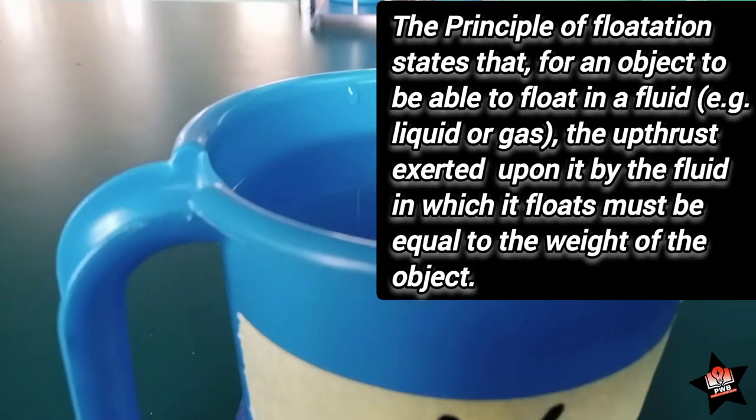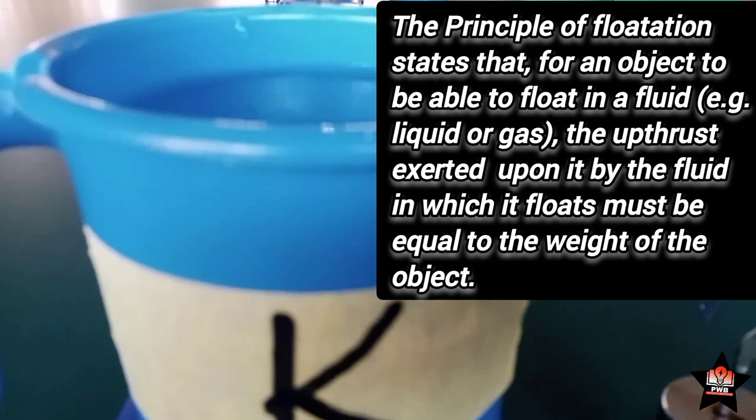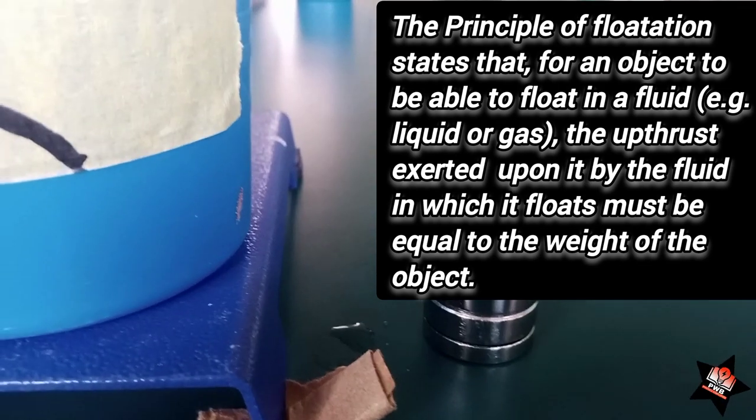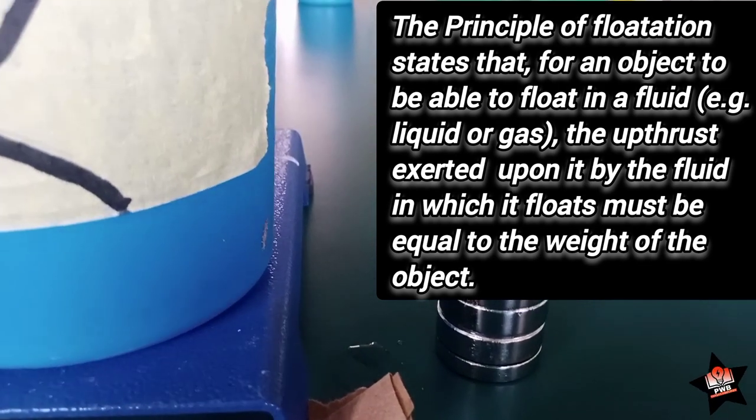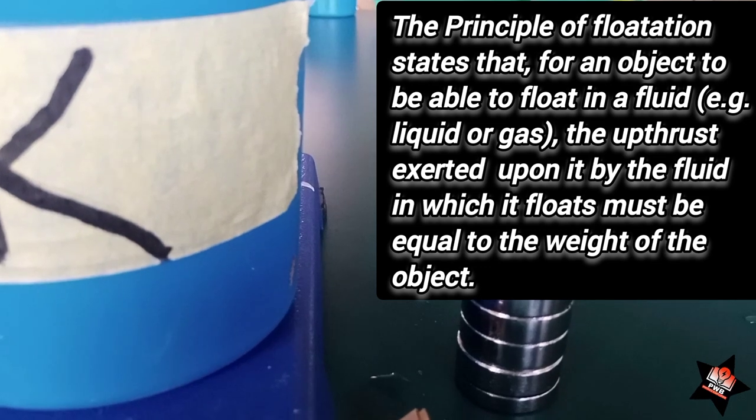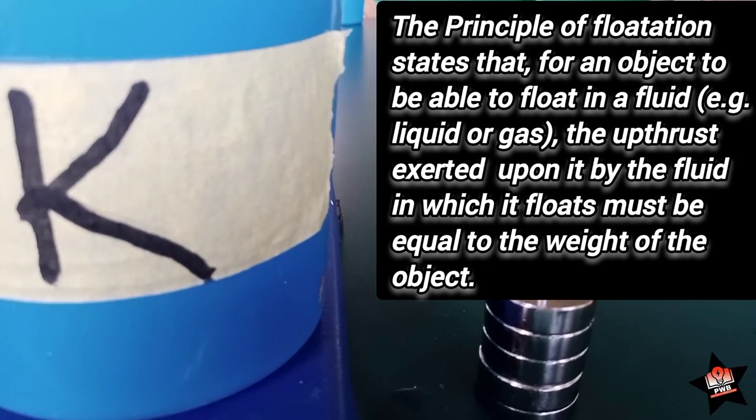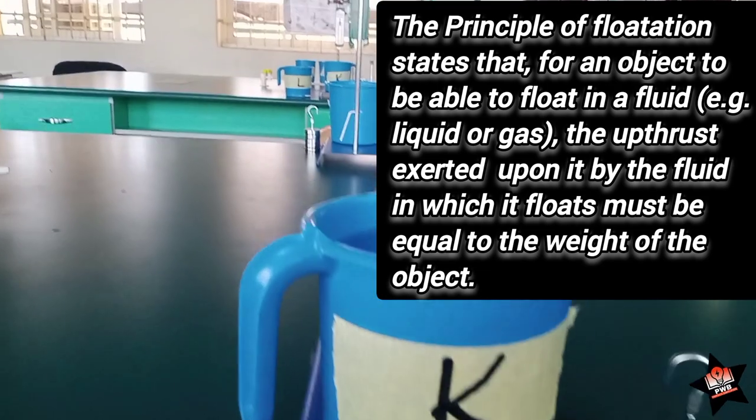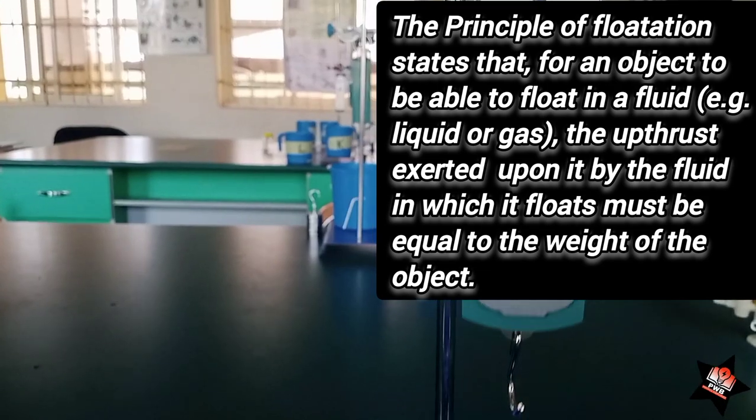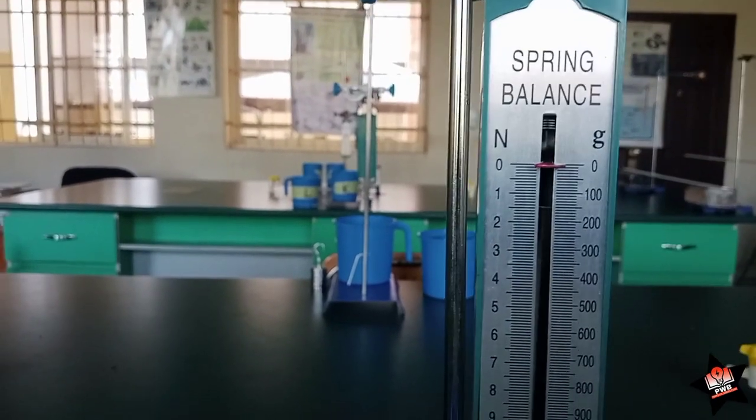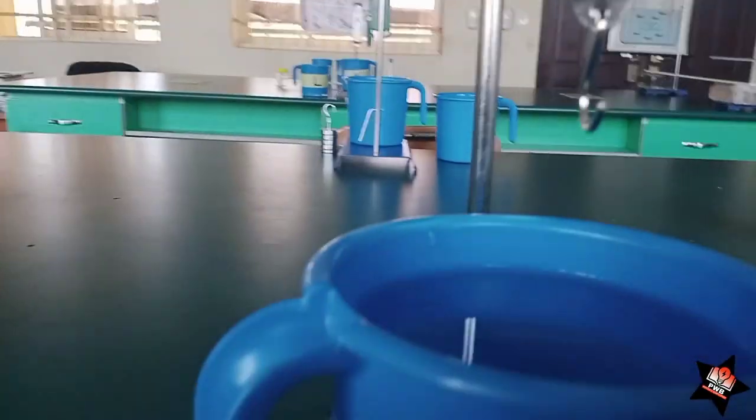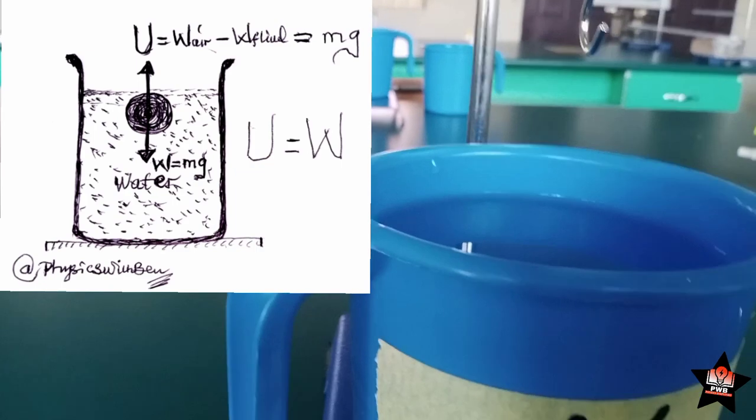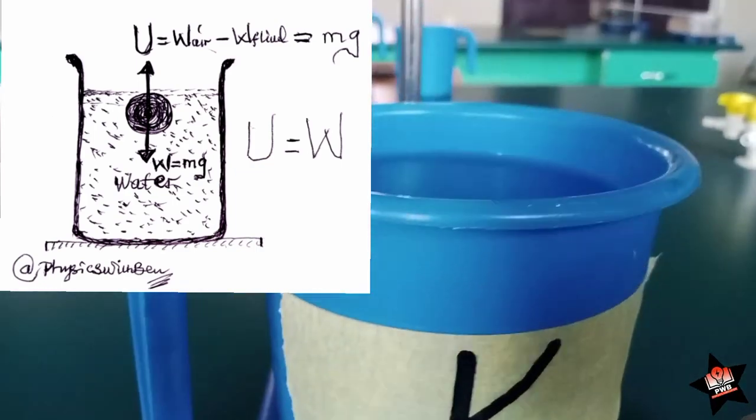The principle of flotation states that for a body to be able to float in fluid, e.g. water, the upthrust exerted on the object must be equal to the weight of the object. The upthrust acts in the upper direction, while the weight acts downward.